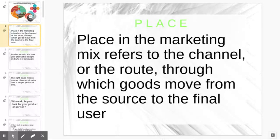There are some things that are producer goods and producer services, where they're going to use that good to make something else for the final customer. So, it might not always be to the final user. It might be going to a producer who's going to make something and then put it out. Their place might be a little bit different than the person making the raw materials.